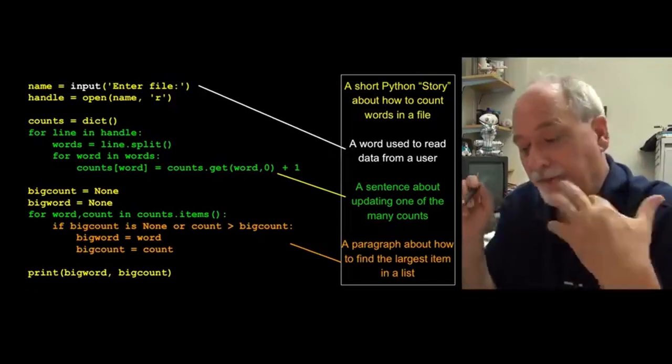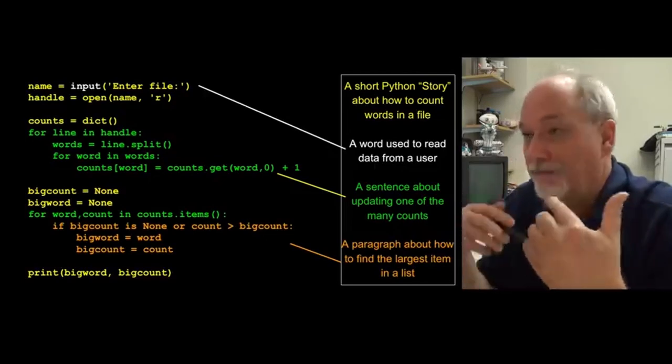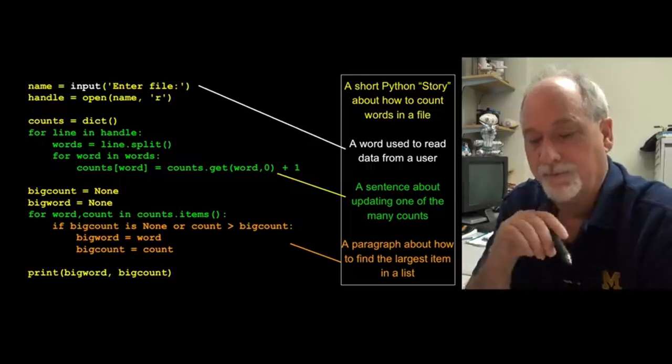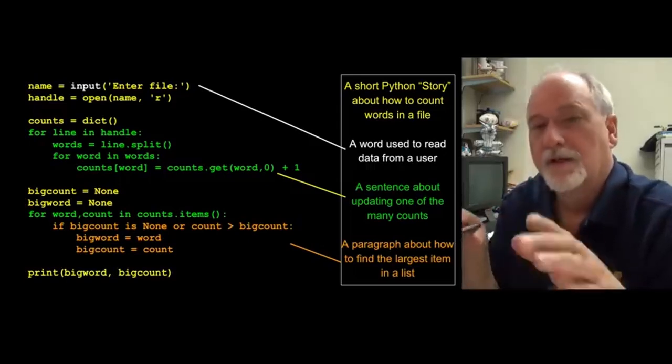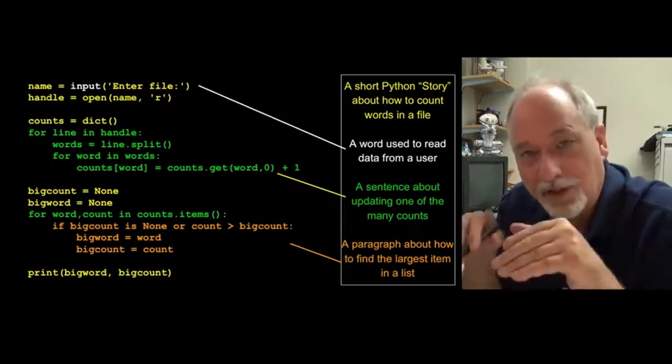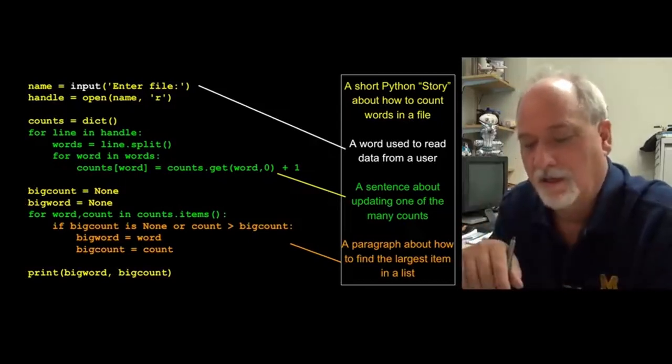And this is, of course, the program that figures out the most common word and prints that most common word out. And so this is a Python short story. It reads some data, it reads the name of a file, it opens that file, it talks about how to make a histogram, and then it looks through for the most common word. So don't worry too much about this. Over the next couple weeks we'll fill in the pieces so that you absolutely understand every single line of this code.